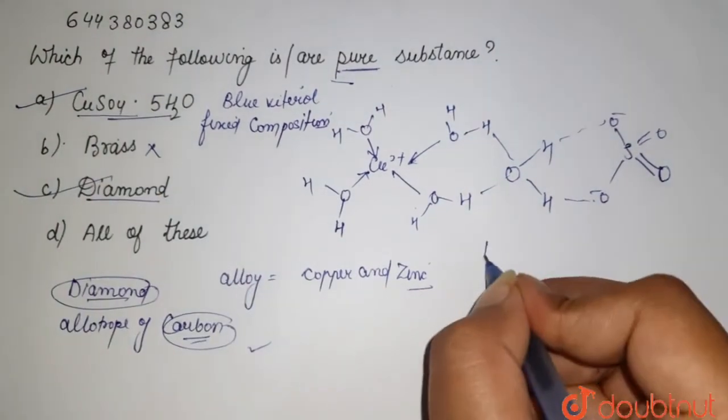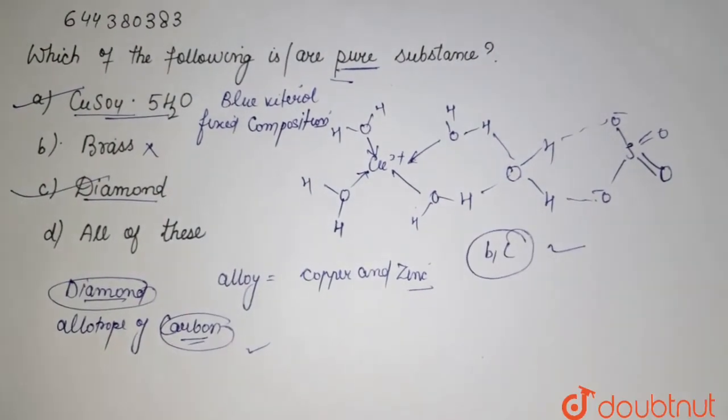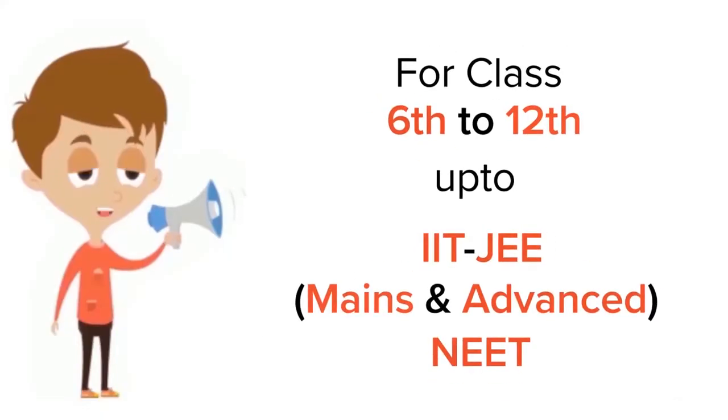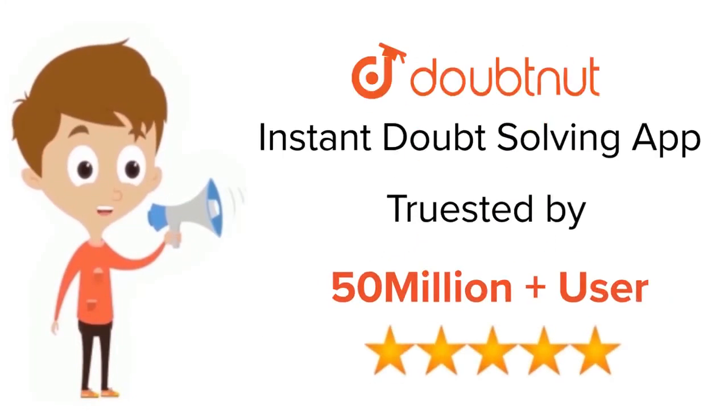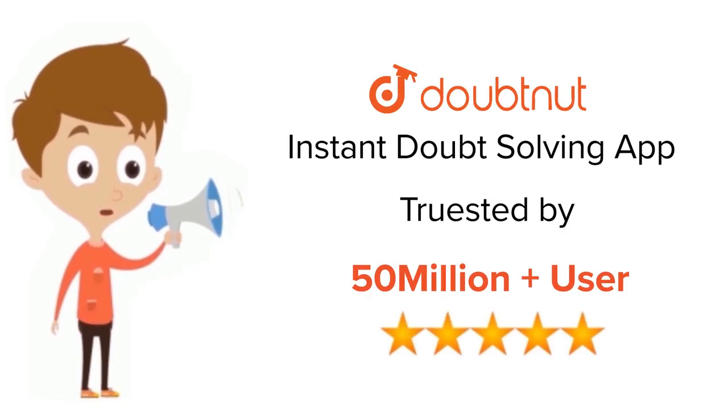So your B and C both are your pure compounds. For class 6 to 12th, IIT-JEE, and NEET level, trusted by more than 5 crore students. Download Doubtnet app today.